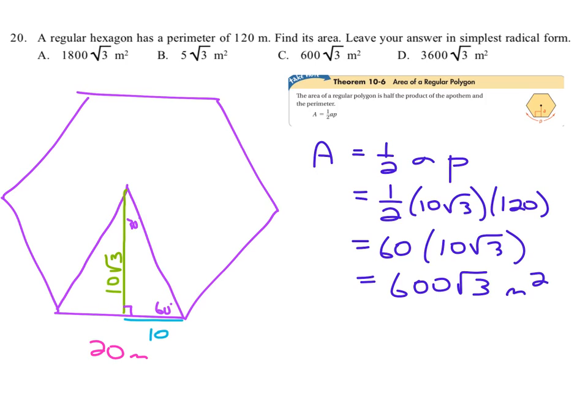What are the units? Meters. We found area, so it's meters squared. And they say leave it in simplest radical form. So we've got 600 root 3 meters squared, and that is answer C.